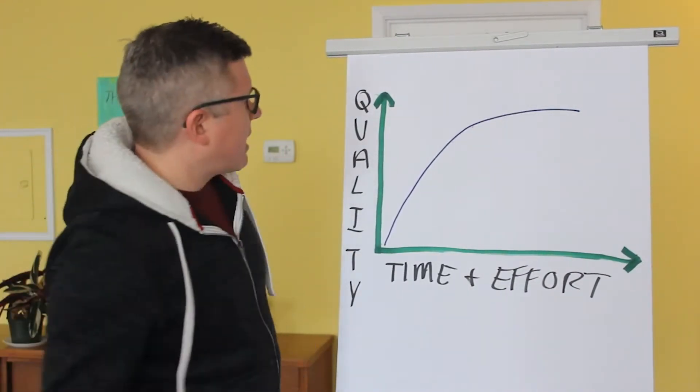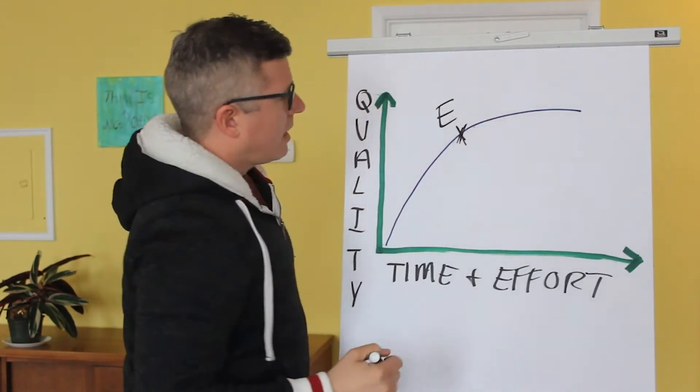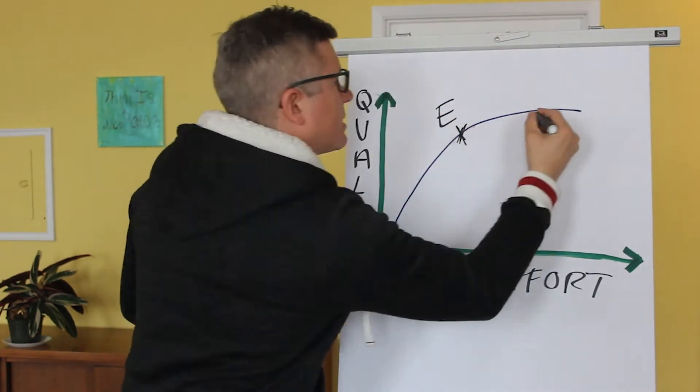Let's say for instance that right around here this is excellent, and maybe right around here as we start to tail off the level of quality increase, this is perfection.